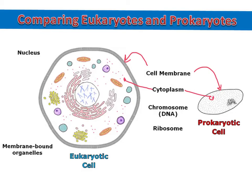Every living thing also contains DNA in the form of chromosomes. Prokaryotic cells have one circular chromosome, and eukaryotic cells have many linear or straight chromosomes. And finally, all cells have ribosomes, because all cells need to make proteins. Ribosomes are the little dots you see in each cell diagram.